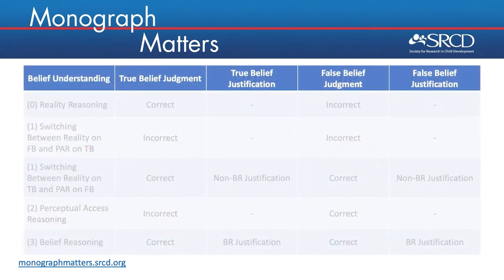Before showing you some examples of children's responses on the Belief Understanding Scale, I wanted to detail exactly how children's responses are scored. More broadly, children can be scored as using reality reasoning, perceptual access reasoning, or belief reasoning. However, we also found that some children will switch between reality reasoning and perceptual access reasoning, and this table shows how children's responses fit into these four scores.